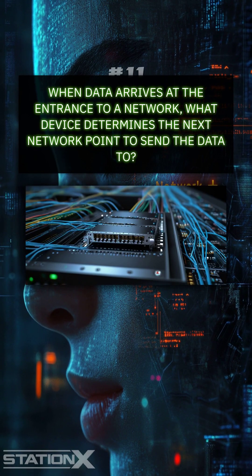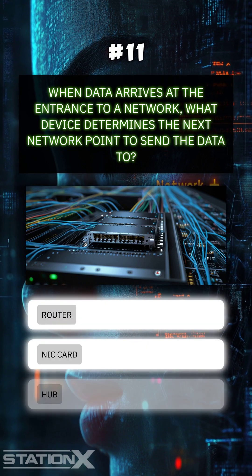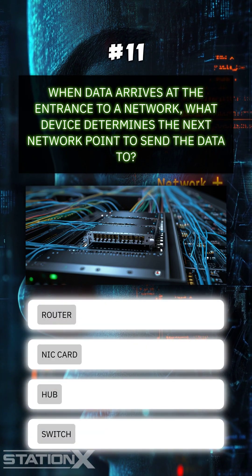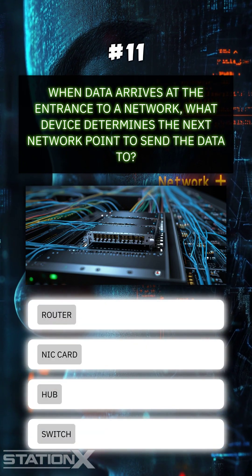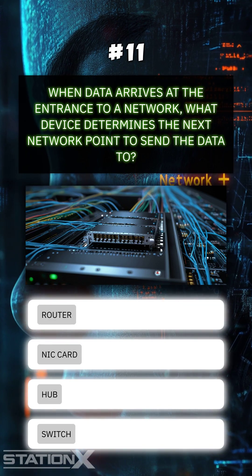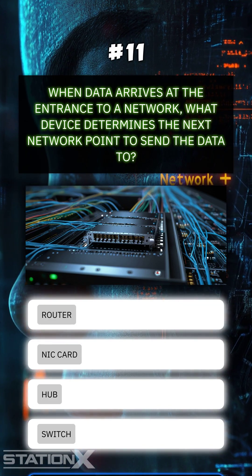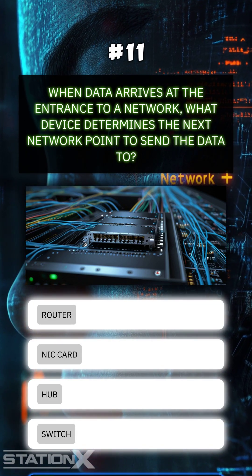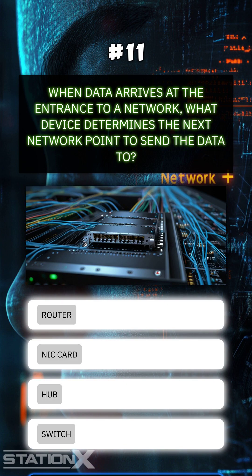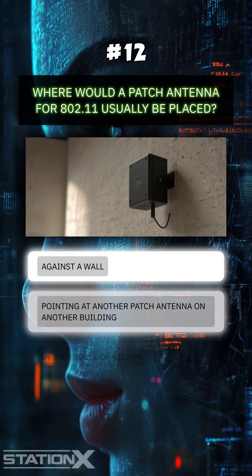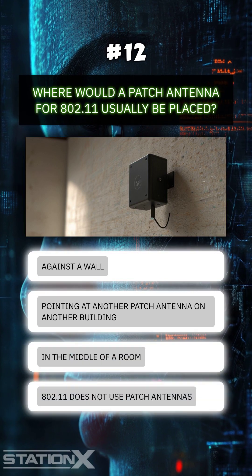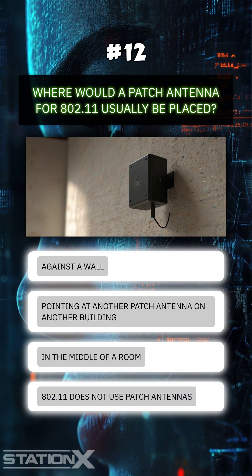When data arrives at the entrance to a network, what device determines the next network point to send the data to? Router. Where would a patch antenna for 802.11 usually be placed?